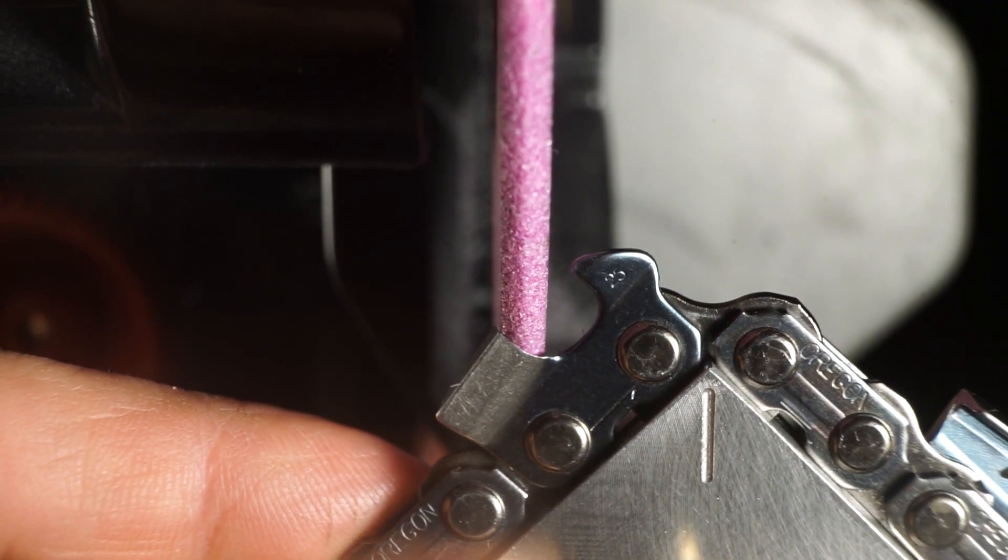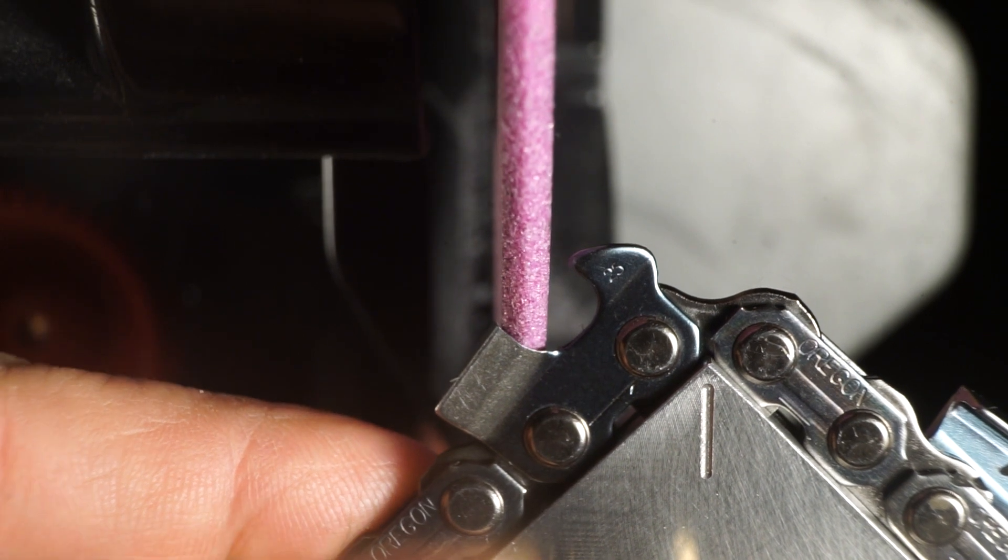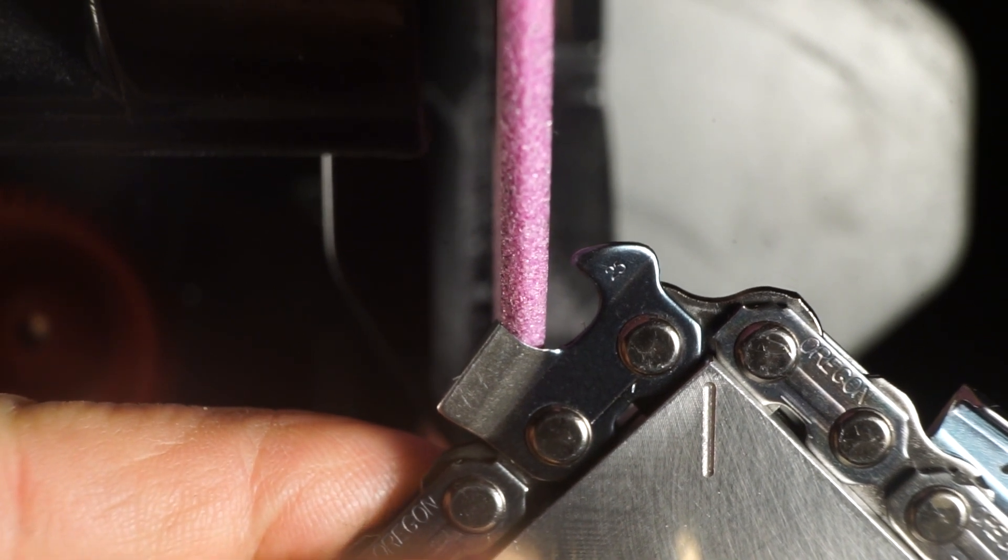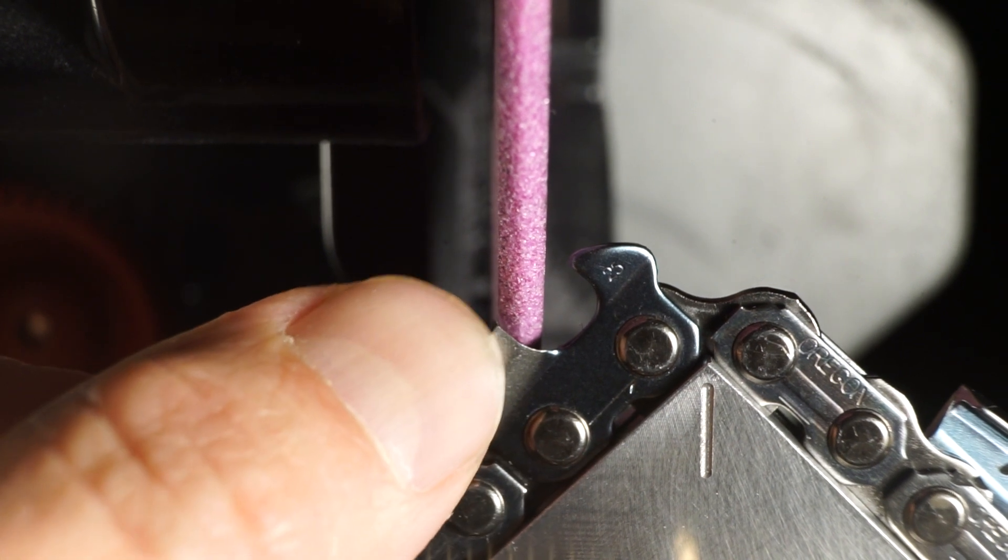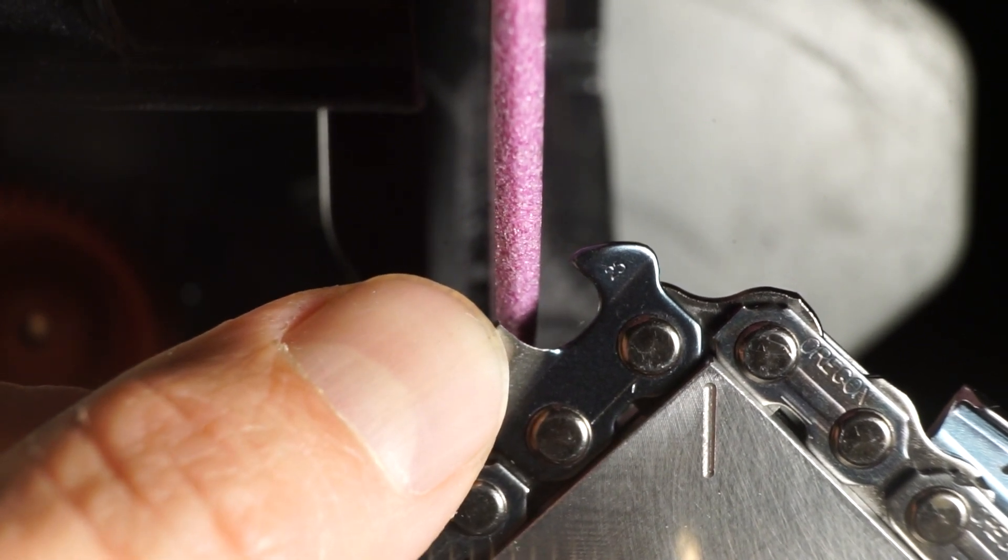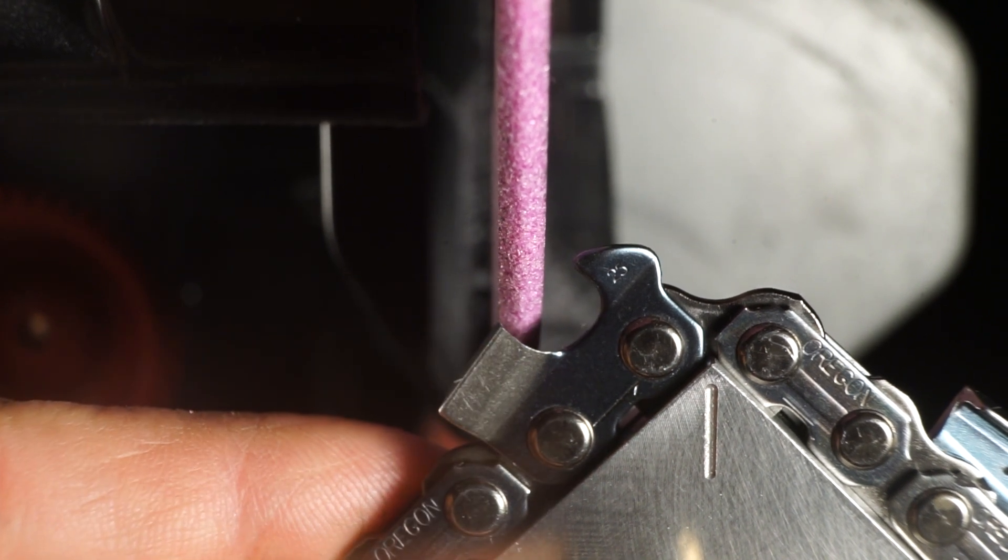Once you have your rivets set, now decide how much tooth you want to remove. If you have a damaged portion of your cutter, look down the line of sight and you can see the side of your wheel, and that will intersect as far as you want to cut.